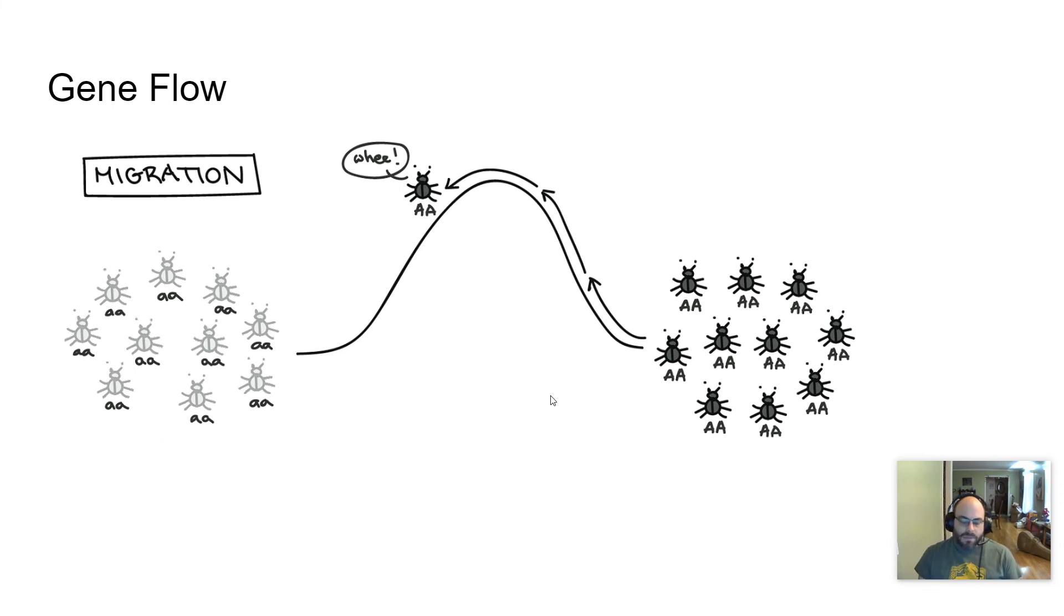Another change that can happen is something called gene flow. Gene flow has to do with migration. It has to do with an individual coming into or out of a population causing the genetic makeup of that population to change. If you look here on the picture, on the left you have a population of homozygous recessive individuals. On the right, you have a population of homozygous dominant individuals. If one of those homozygous dominant individuals goes into the homozygous recessive population, it is going to dramatically change the phenotypic ratio of that population over the course of several generations.